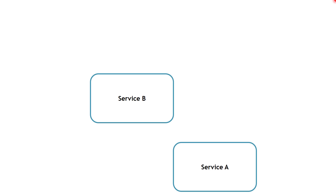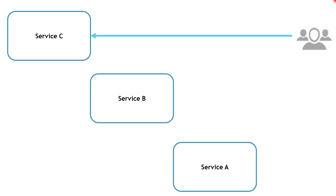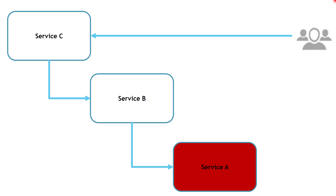Let's say we have three services: Service A, Service B, and Service C. Some clients are sending requests to Service C. In order for Service C to perform the client requests, Service C has to call Service B to get some data, and similarly Service B has to call Service A to get some data as well. Now let's assume that Service A has got compromised or become unavailable. We know for sure that Service A will not be able to perform its function, and we are going to lose the part of data that Service A was supposed to get.